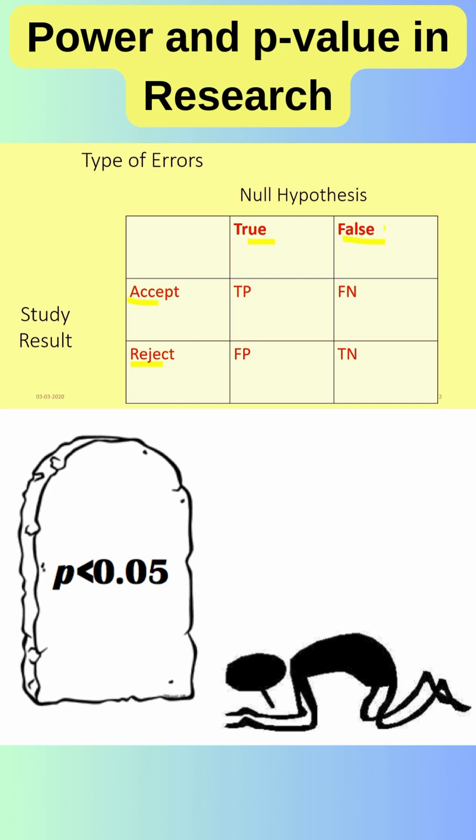When the null hypothesis is false and you reject it correctly, then it is called true negative. When the null hypothesis is true and you accept it, that is called true positive. When the null hypothesis is true and you reject it, that is called false positive. When the null hypothesis is false and you accept it, that is called false negative.